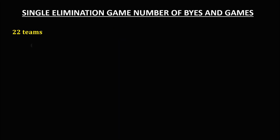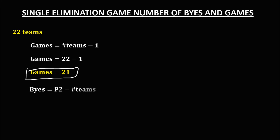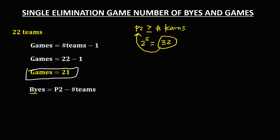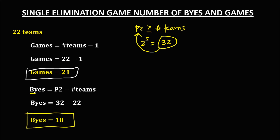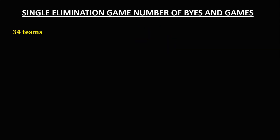For 22 teams, the number of games is 22 minus 1, so 21 total games. For the number of byes, since the power of 2 must be greater than or equal to 22, we use 2 to the power of 5, which is 32. So the total number of byes is 32 minus 22, which equals 10. For the diagram, since there are 22 teams, that's 11 for the upper half and 11 for the lower half.